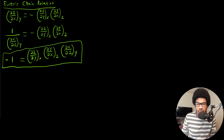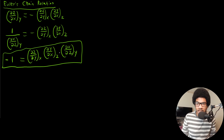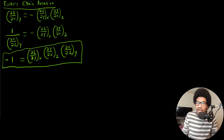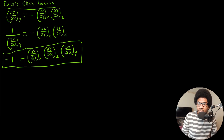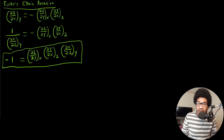You can see the chaining in this relation: dy chains between the first and second partial derivatives, and dx chains between the last two. That's why it's called the Chain Relation — it involves this chaining of partial derivatives for three related variables.